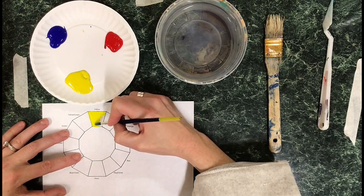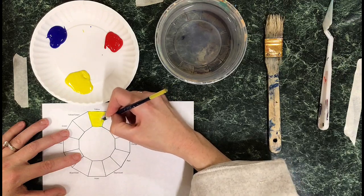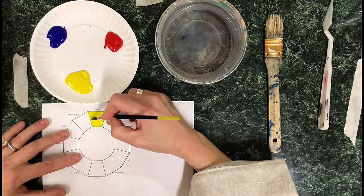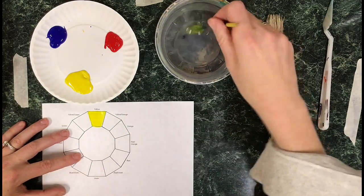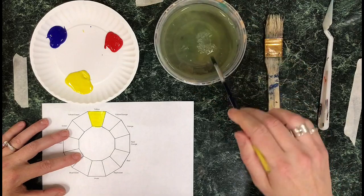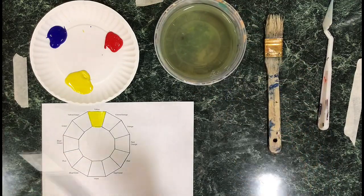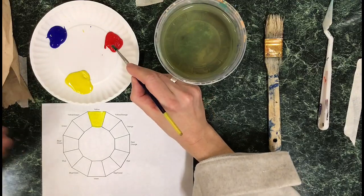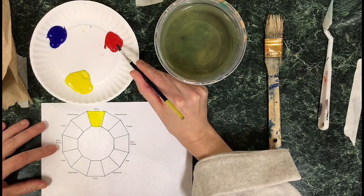The good thing about tempera paint is it doesn't stain clothes, it's really inexpensive, and it's just good for these beginning painting stages. I kind of call it kindergarten paint because it's really not that sophisticated, but it's perfect for what we're doing.